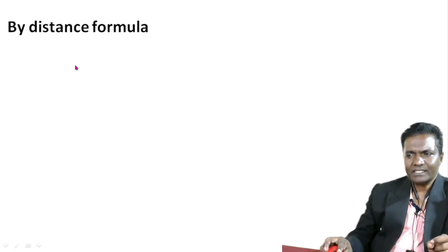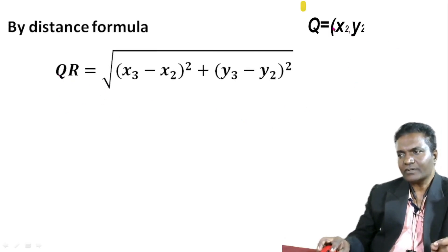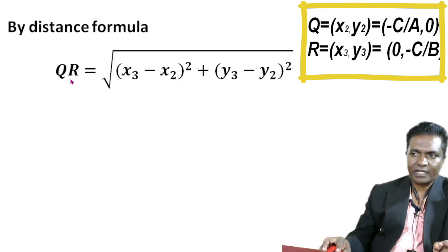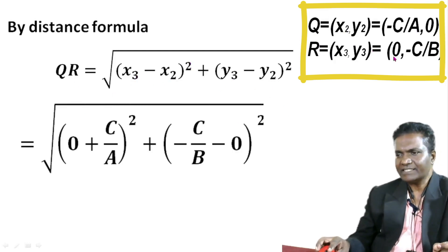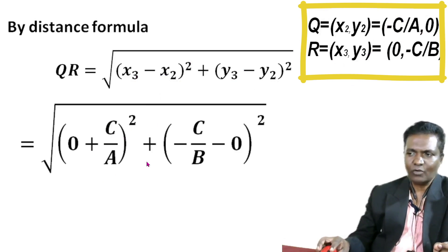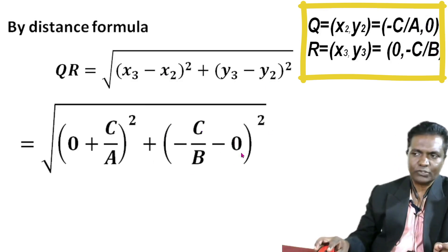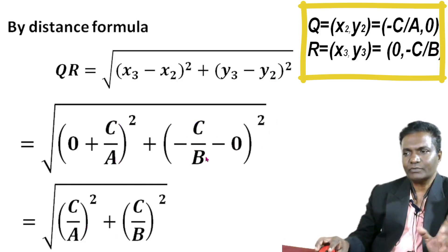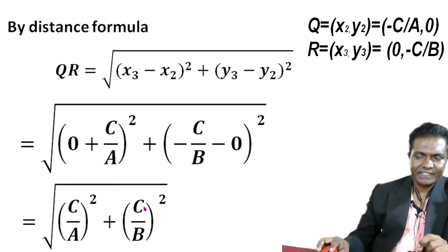Now we find QR using the distance formula. Q is (minus c by a, 0) and R is (0, minus c by b). So QR equals root of (x3 minus x2) squared plus (y3 minus y2) squared, which gives root of c squared by a squared plus c squared by b squared, equal to c times root of 1 by a squared plus 1 by b squared.